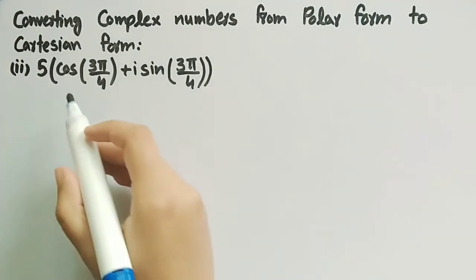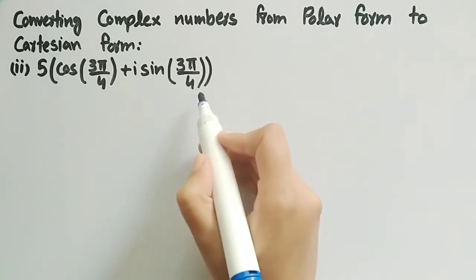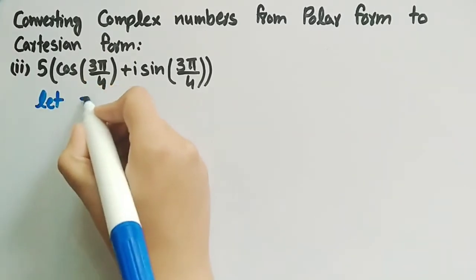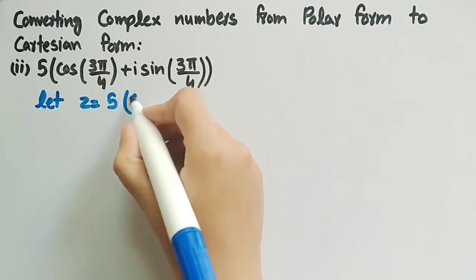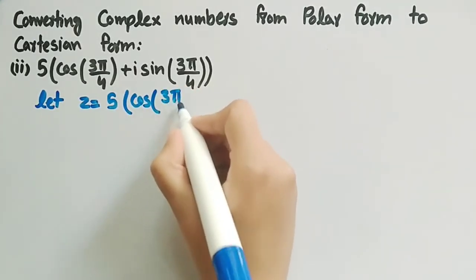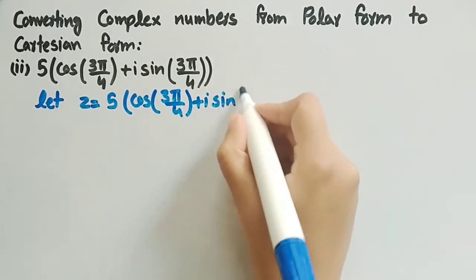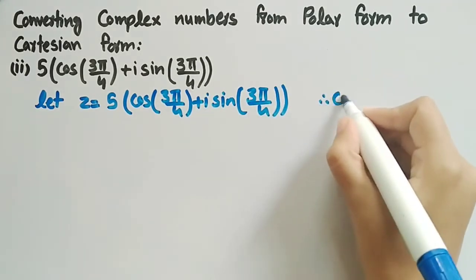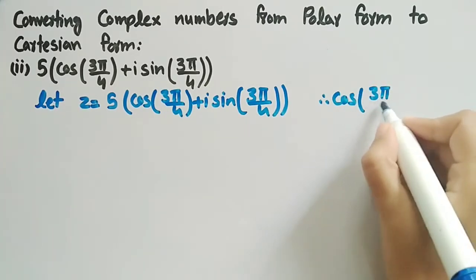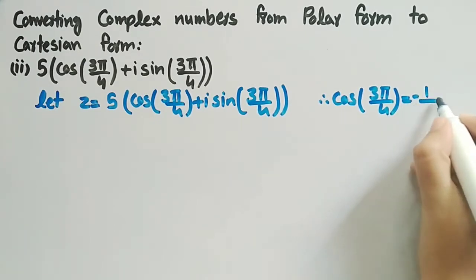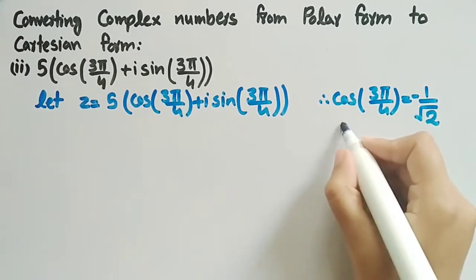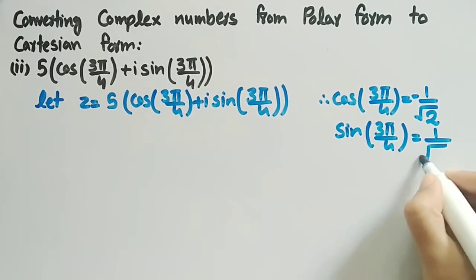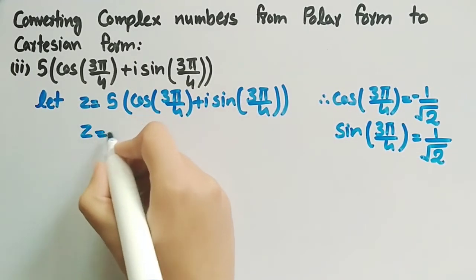Now we will convert 5 cos(3π/4) + i sin(3π/4) from polar form to cartesian form. Let z = 5(cos(3π/4) + i sin(3π/4)). We know that cos(3π/4) = -1/√2 and sin(3π/4) = 1/√2. Using these values we get z = 5(-1/√2 + i·1/√2).